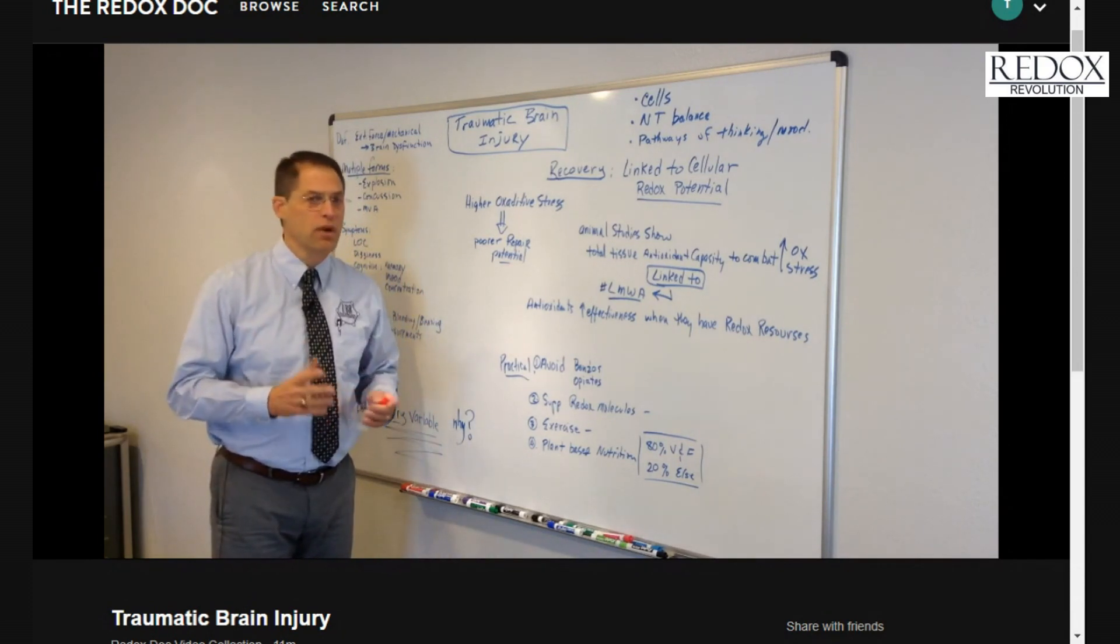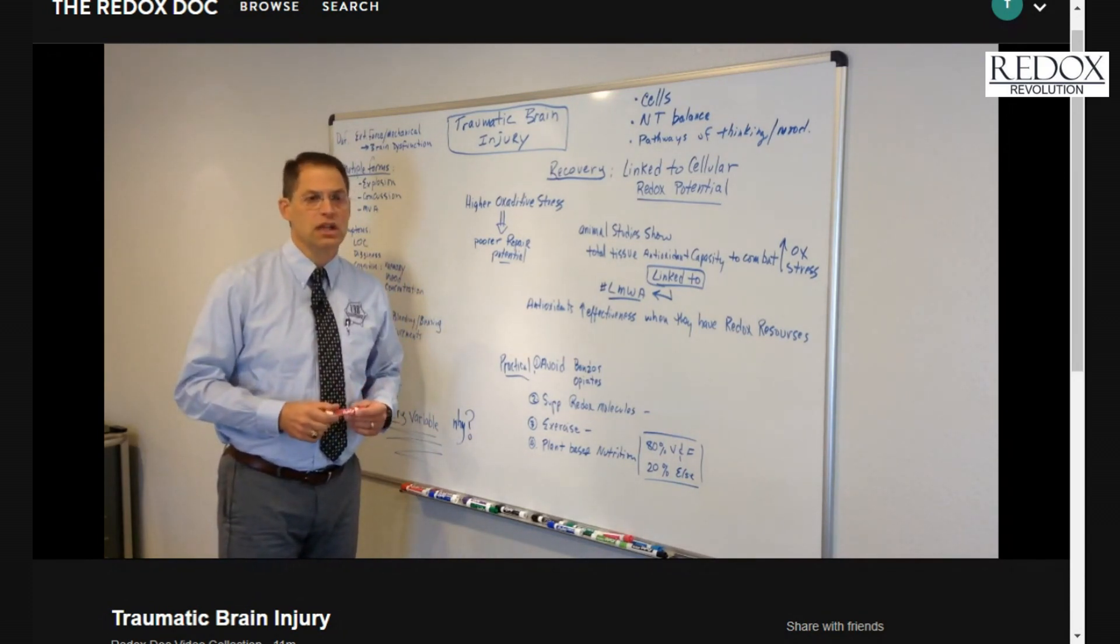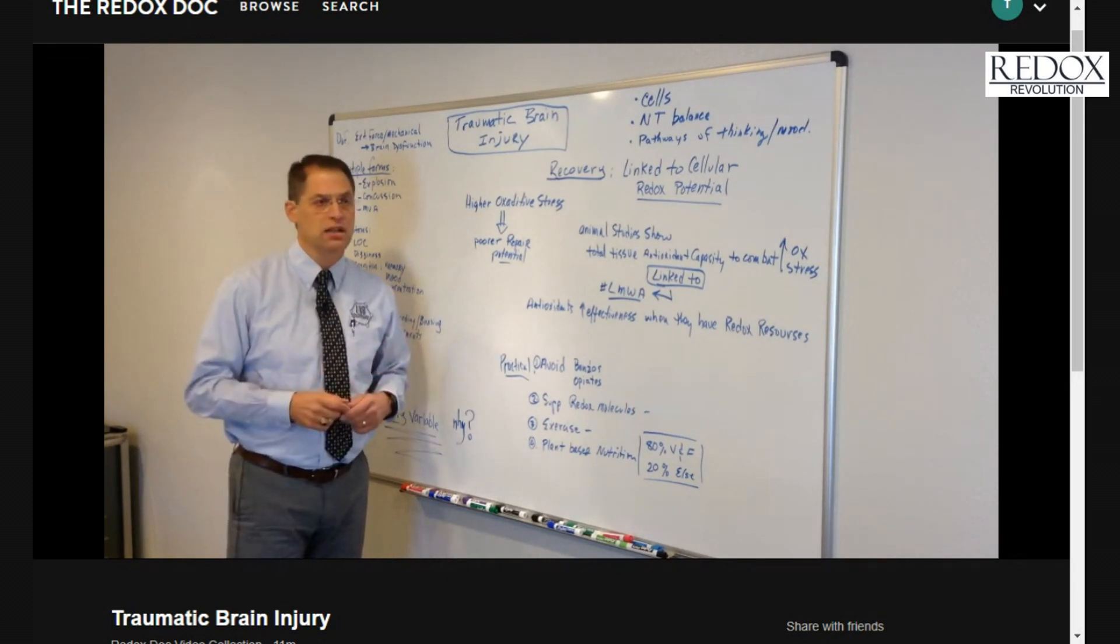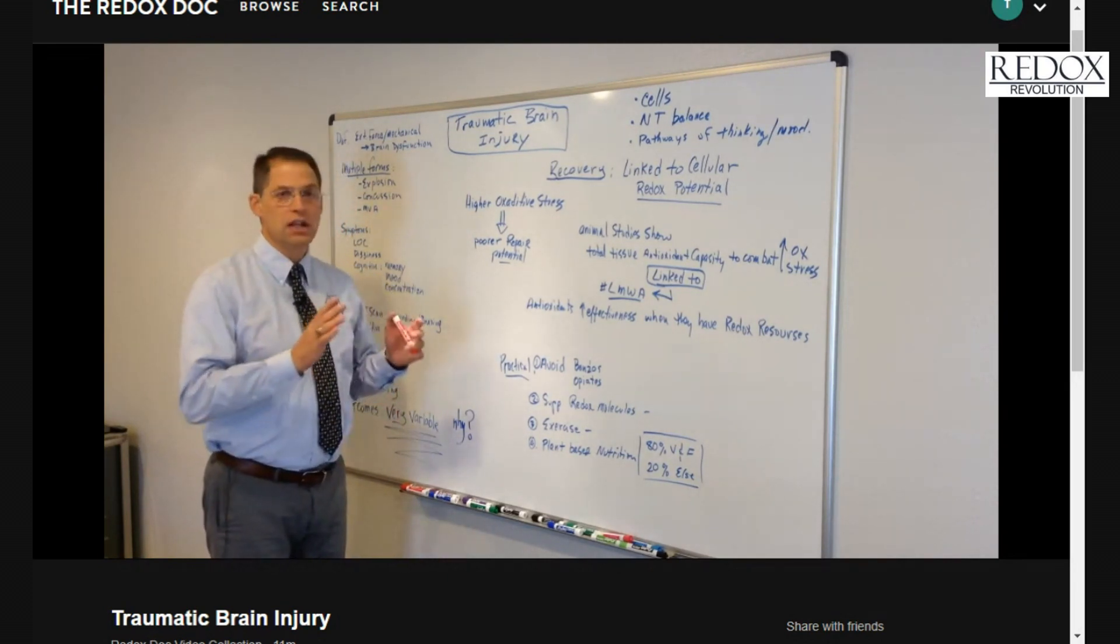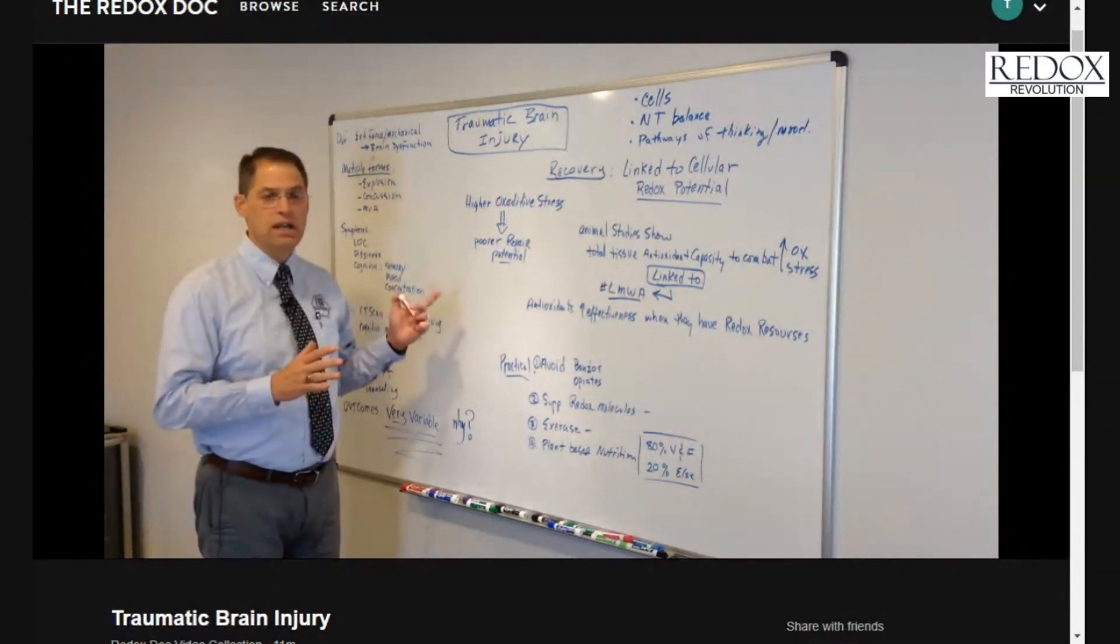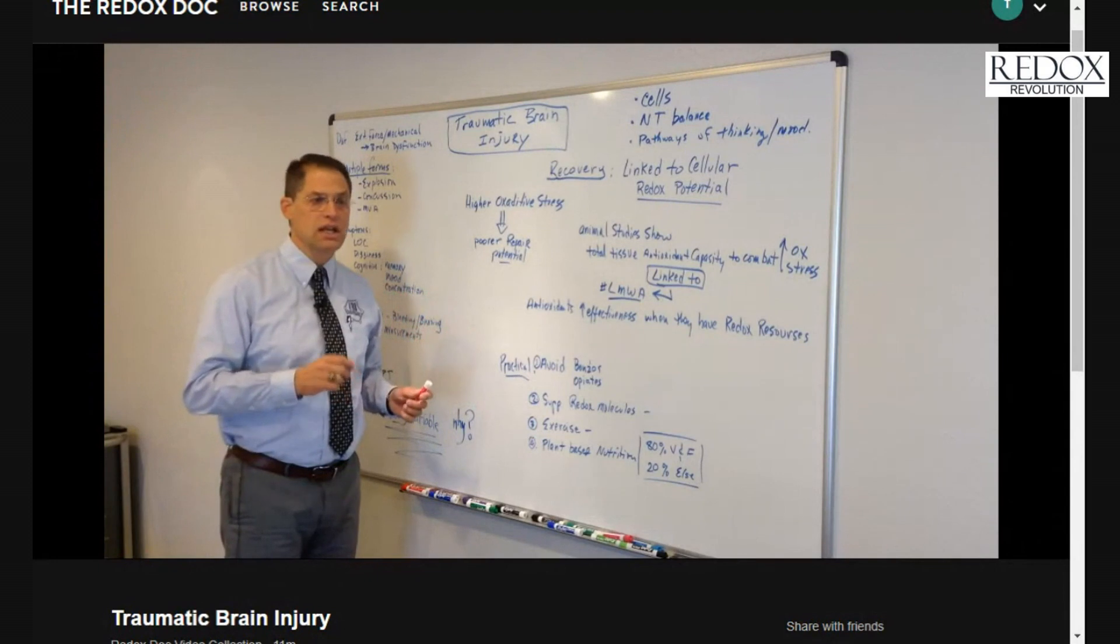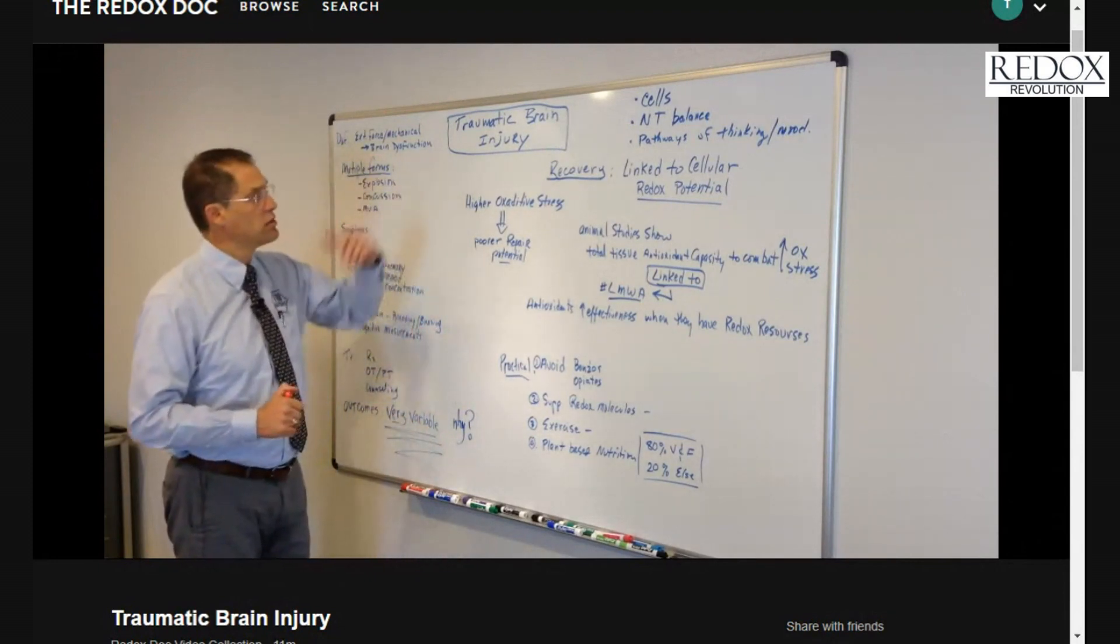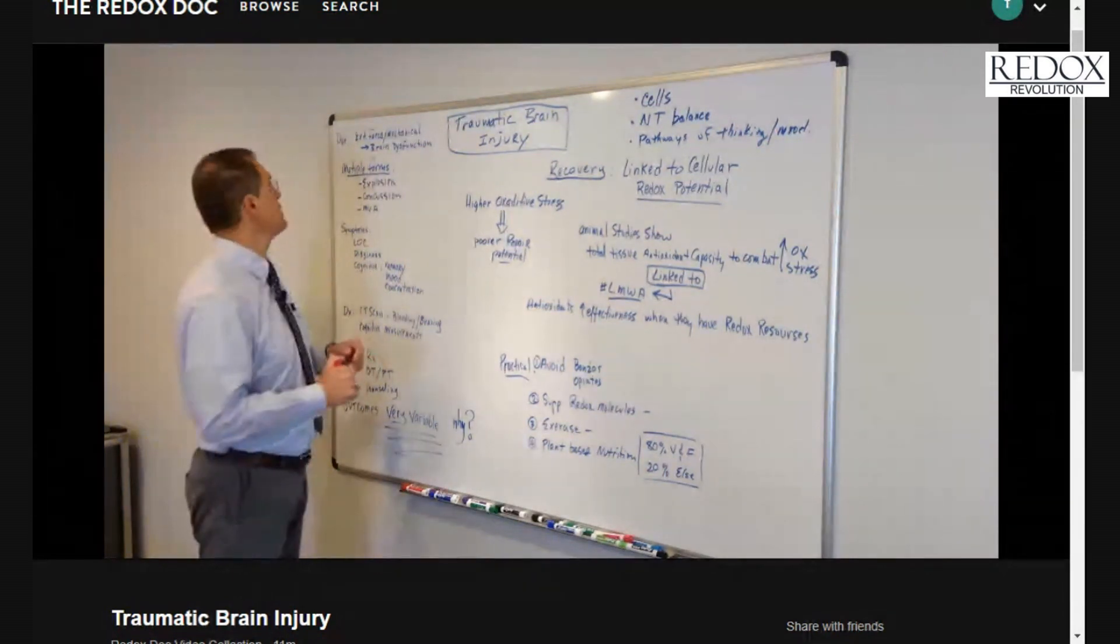But our brain cells are unique and special, and they oftentimes are very much affected. So I thought I'd spend a little time today talking about this topic because it's important and explain to you how redox chemistry is intimately involved in the healing process and recovery process in TBI, what traumatic brain injury is abbreviated as.